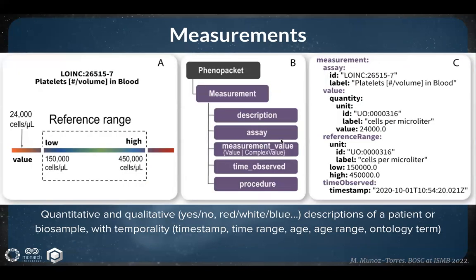Next, the measurement element. Measurements can be quantitative and qualitative — yes, no, colors — and they have a description of a patient or biosample, and also temporality: a timestamp, a time range, an ontology term. The example here shows a measurement of platelet count. On the left, we see a graphical representation of an abnormal laboratory value that is way outside of the reference range. The panel in the middle shows the relevant phenopacket hierarchy: description, assay, measurement value, time, and procedure. On the right, the panel shows a measurement representing an abnormally low value for thrombocyte count — 24,000 cells per microliter in a range that should be about 150,000 to 450,000. The reference range represents what was applied in the specific investigation, which may reflect age- or sex-specific values for some analytes.